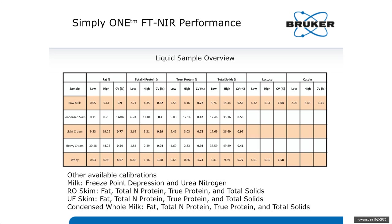When running a single sample with five replicate measurements, typically what we find for repeatability on raw milk and cream samples is a standard deviation of about 0.005 to 0.007% in the measurements — so very, very repeatable from sample to sample.